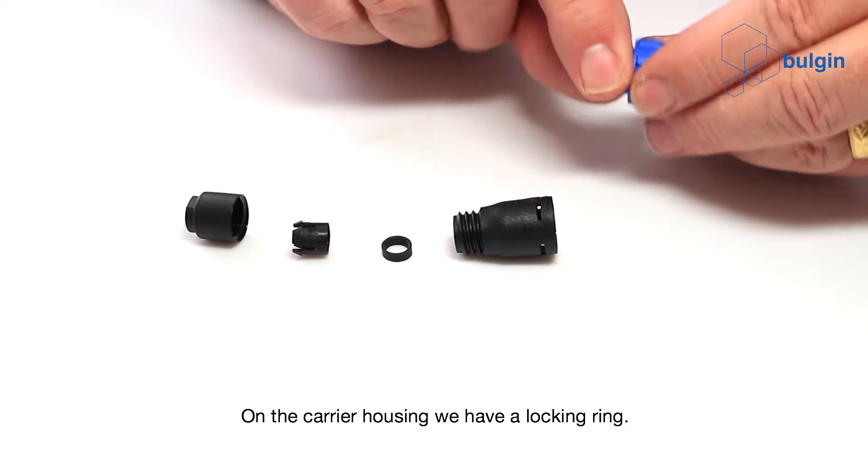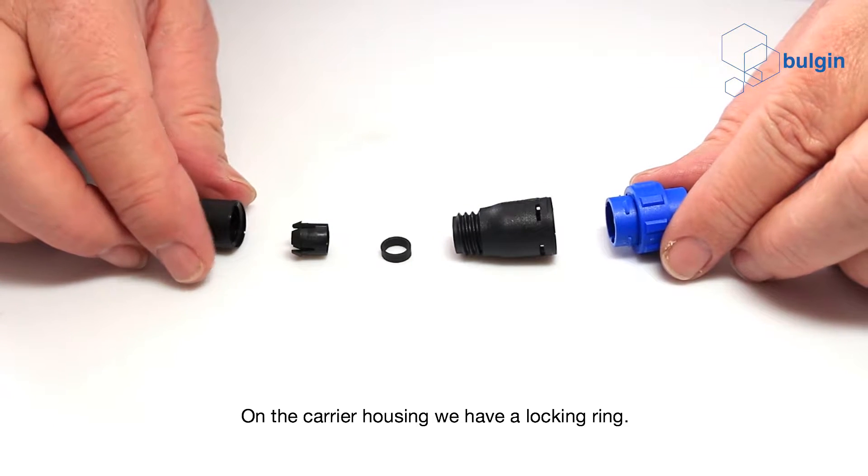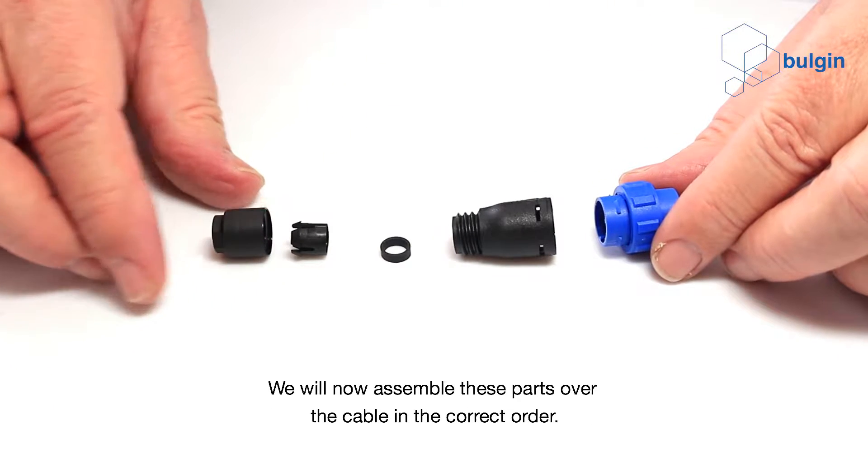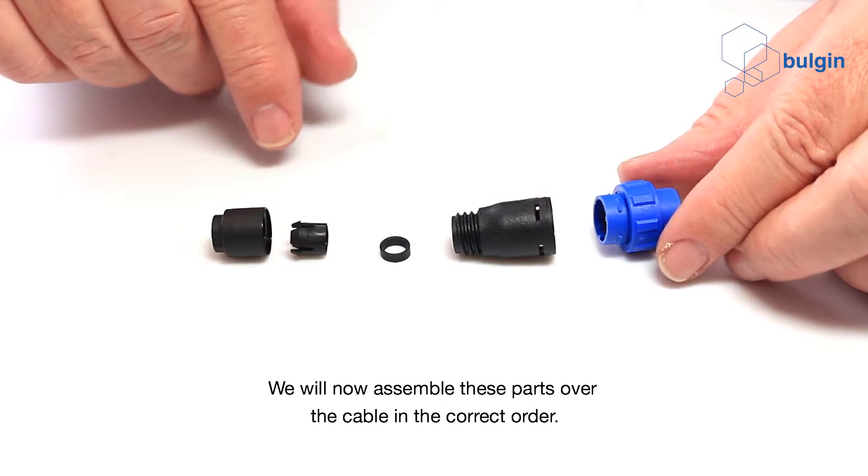On the carrier housing, we have a locking ring. We will now assemble these parts over the cable in the correct order.